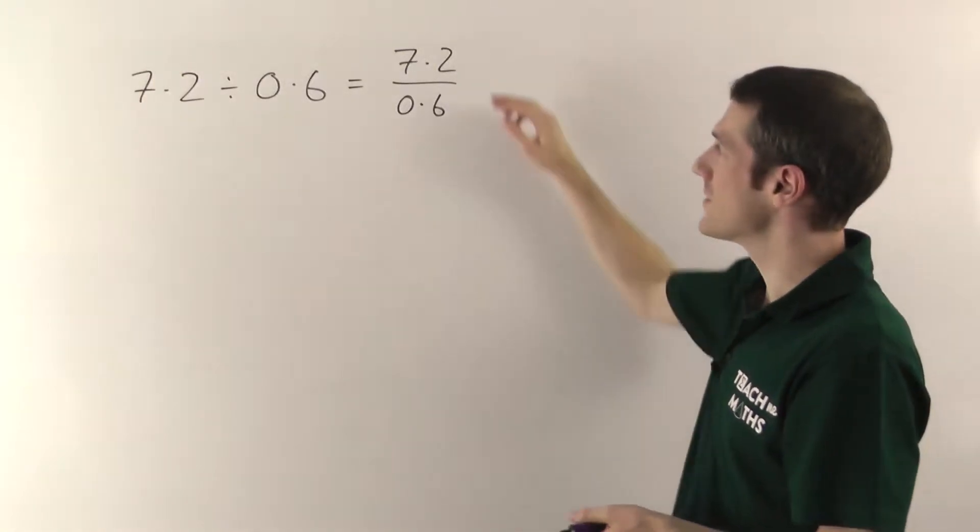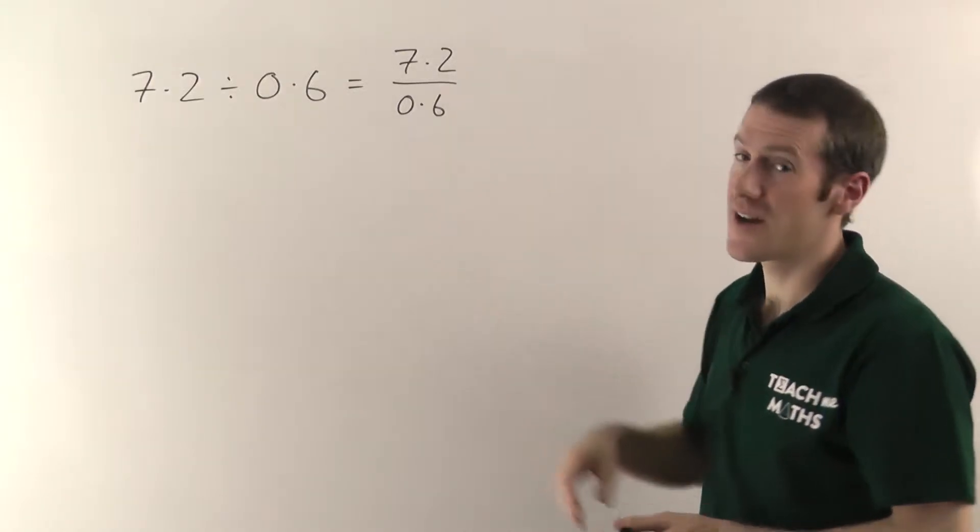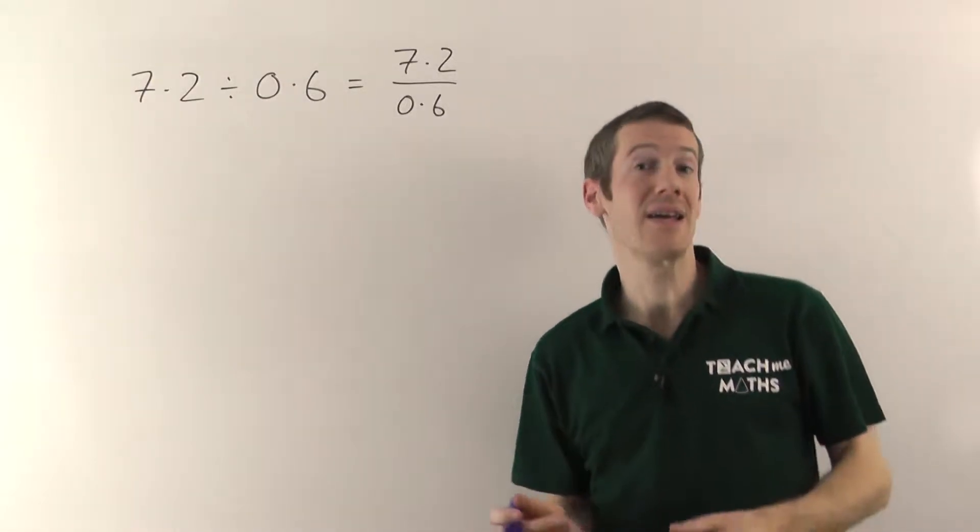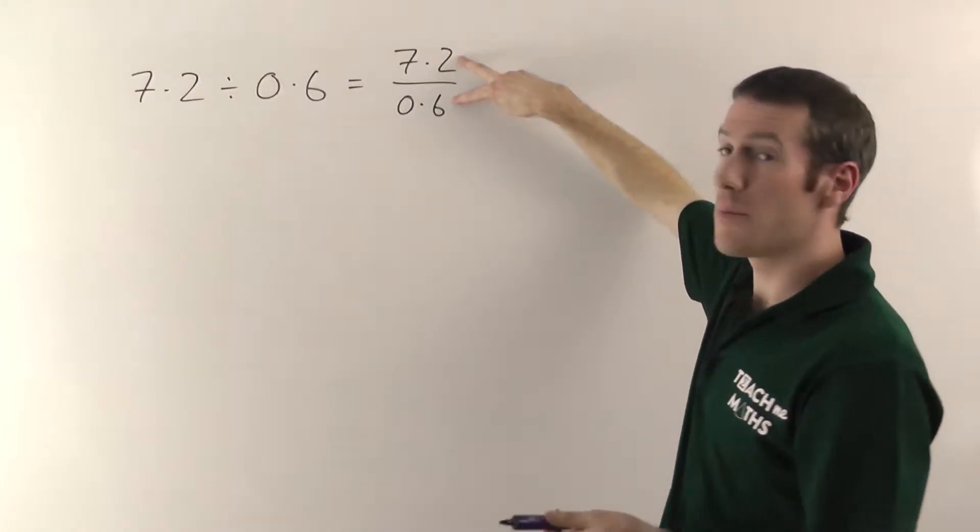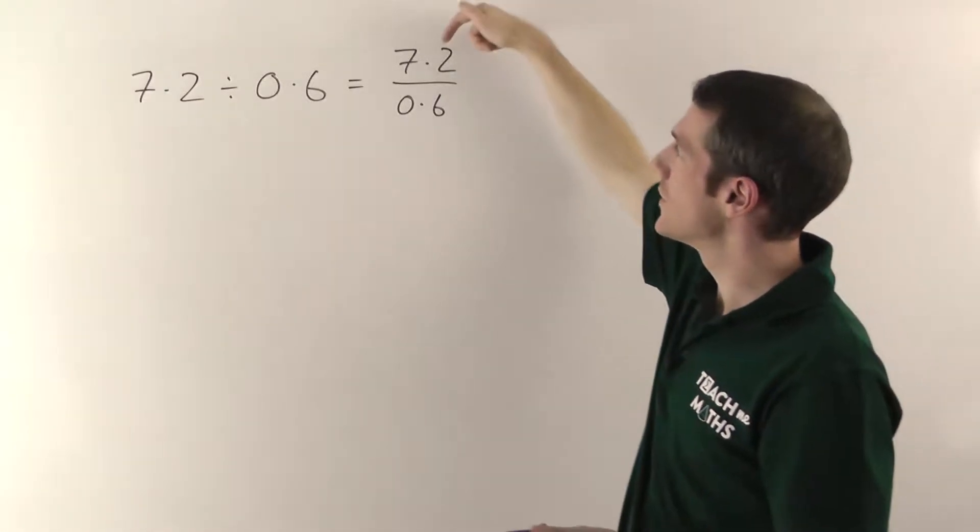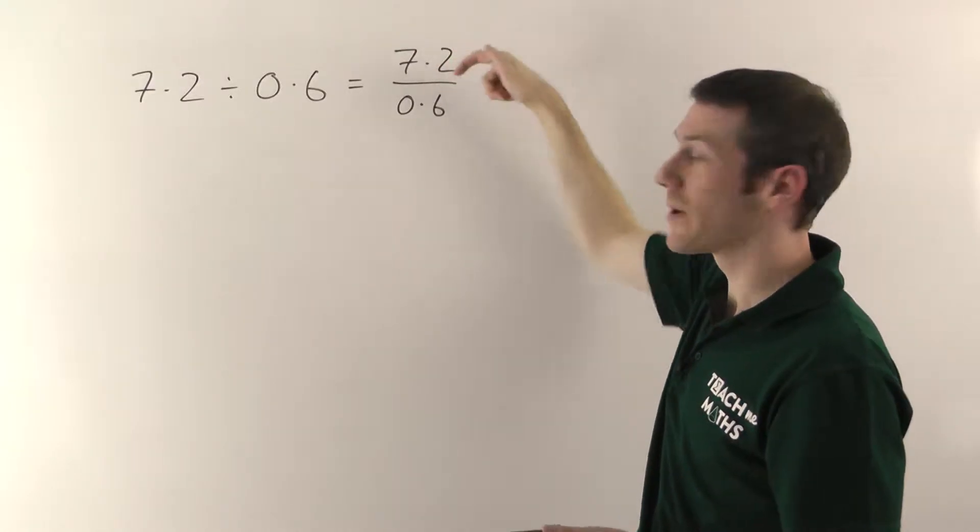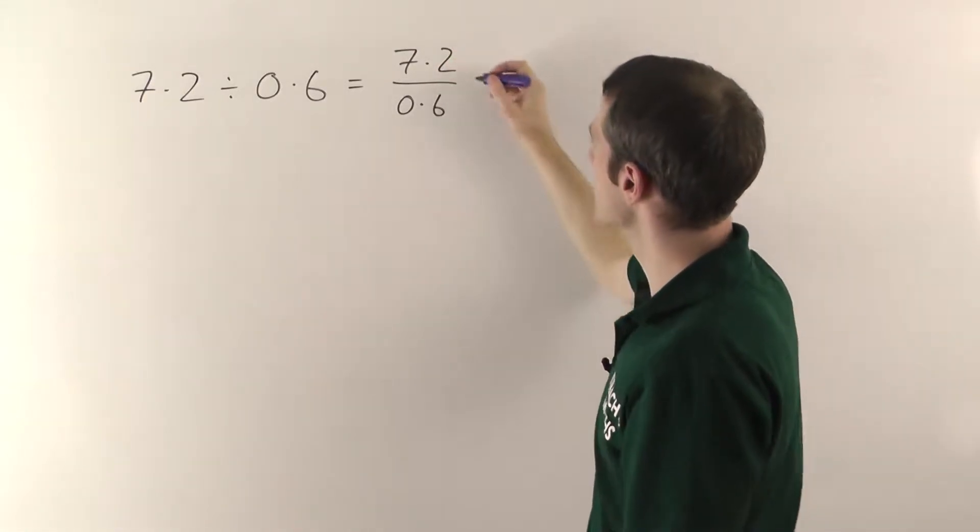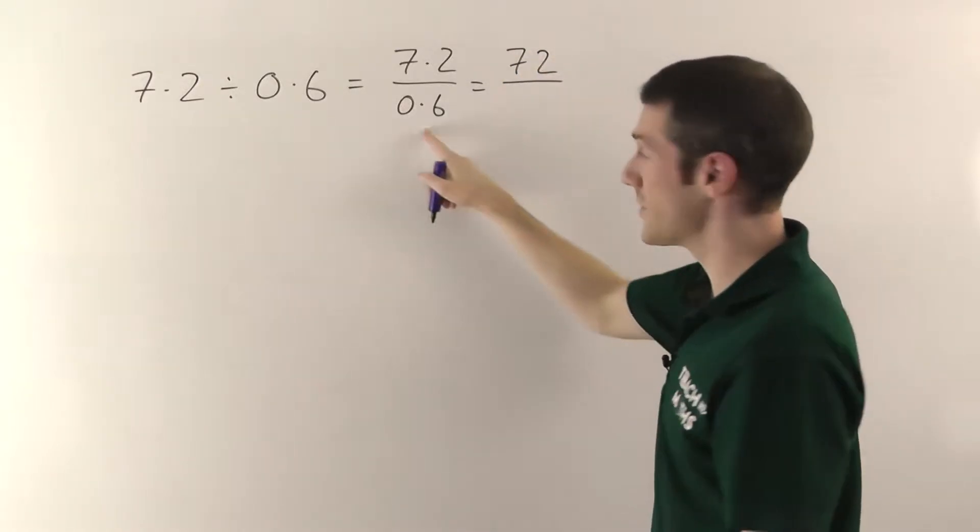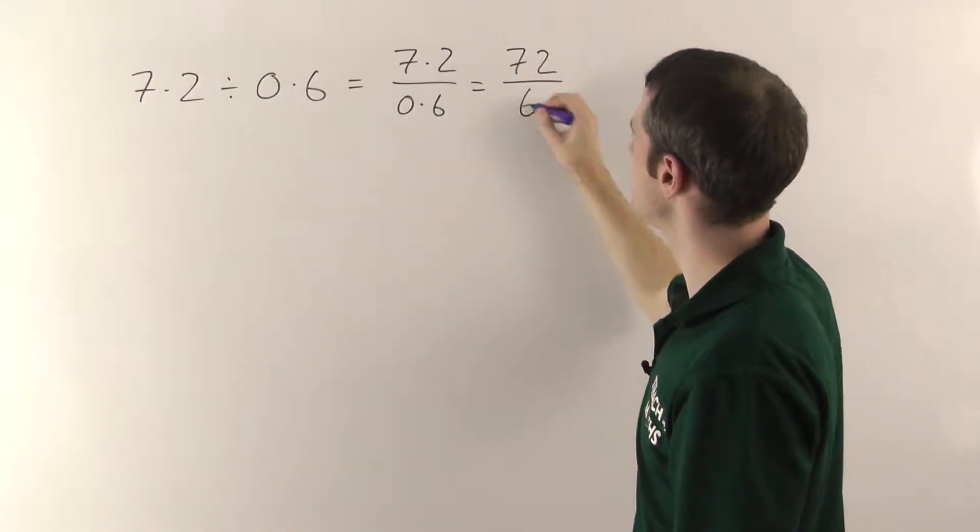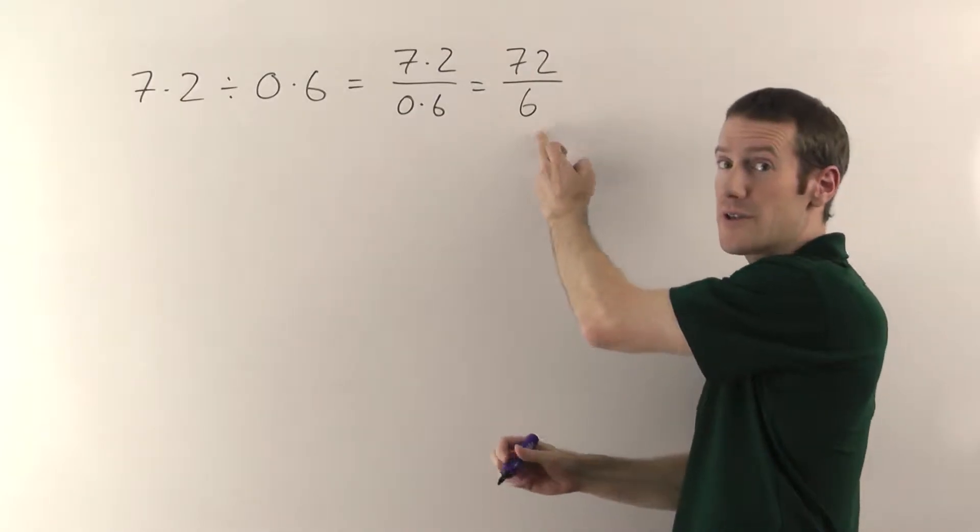Now remember, with equivalent fractions, as long as you times the top and the bottom of any fraction by the same number, it doesn't change. You've still got the same fraction. So we're going to times the top and bottom by 10, because all that will do is move the decimal point one place to the right in both cases. If we times the top by 10, we get 72, times the bottom by 10, we get 6. So now we've got a whole number on the bottom. Great!